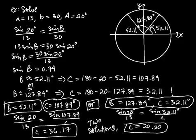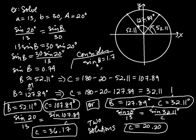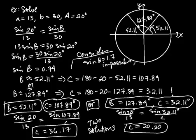You can see why we call SSA the ambiguous case — you can have one solution, two solutions, or no solutions at all. The no-solution case arises when your calculation gives something like sine of B equals 1.7, which is impossible since sine is always less than or equal to 1. That's how you use law of sines, including the ambiguous case.